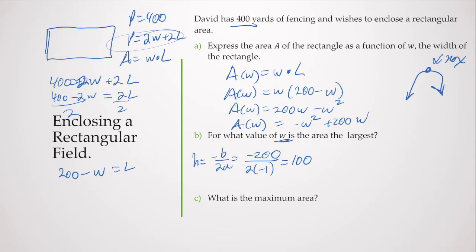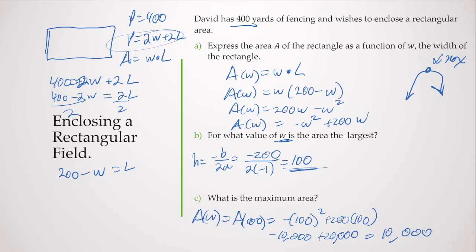If I want to find the area, I'm going to have to find the Y value, A of W, our area at 100. So A of 100 equals negative 100 squared plus 200 times 100. That gives me negative 10,000 plus 20,000. So our maximum area would be 10,000. That was pretty quick. Let's go through another example.